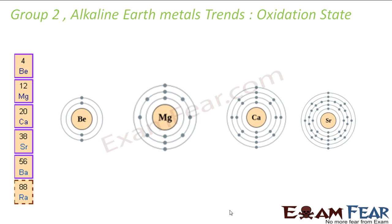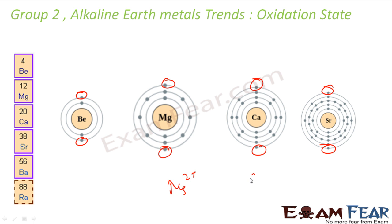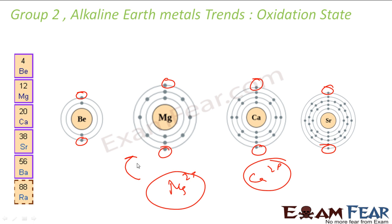Now we will talk about the oxidation state. All of these — beryllium, magnesium, calcium — have two extra electrons in the outermost shell. If they lose two electrons, they will become stable. So mostly the oxidation state is plus 2, because by losing two electrons they achieve a stable configuration.